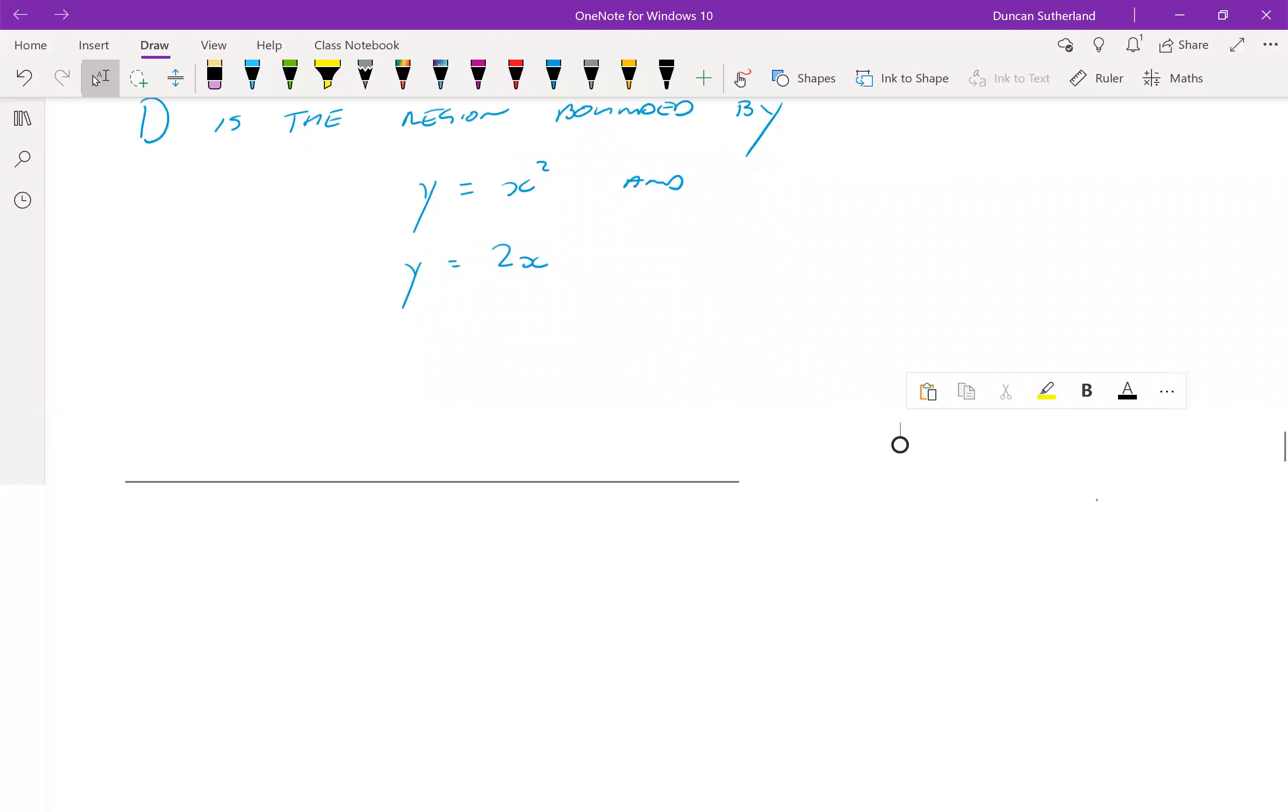All right, we're going to have a look at this region of integration now. So we're going to look at this region that I've called D, and I've said that it's a region bounded by the lines or the curves, y equals x squared and the line y equals 2x.